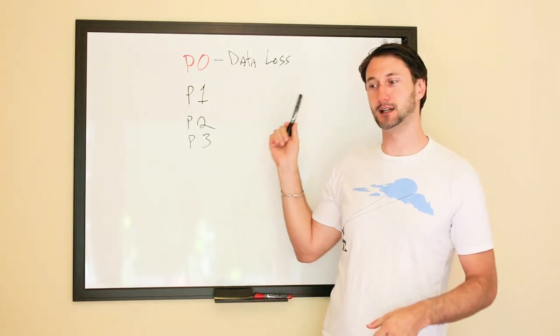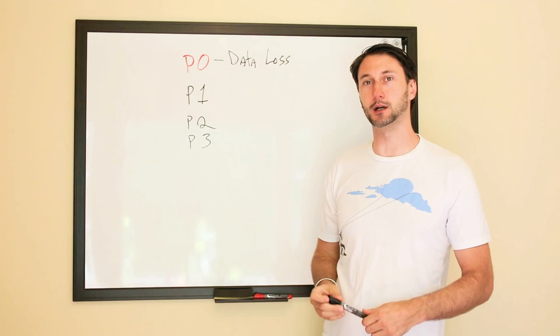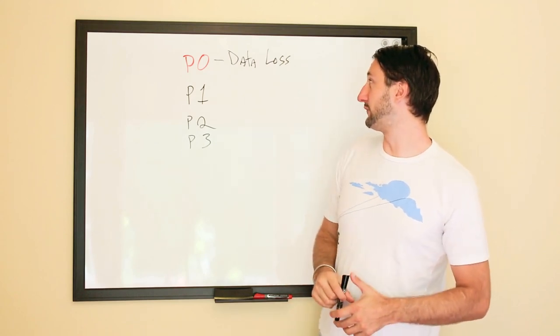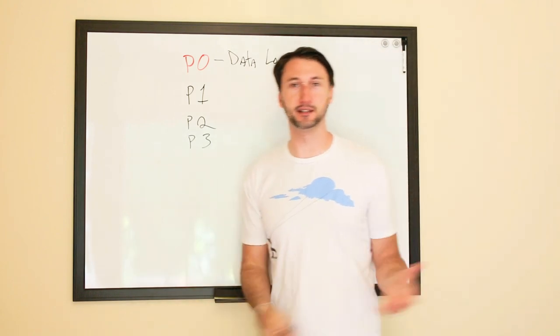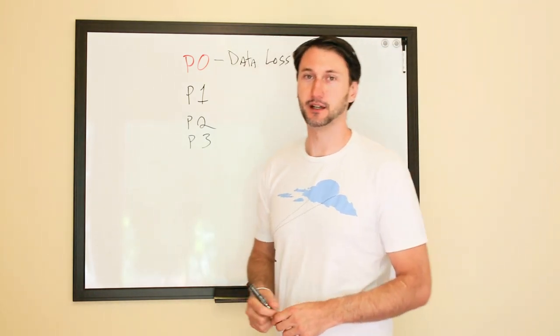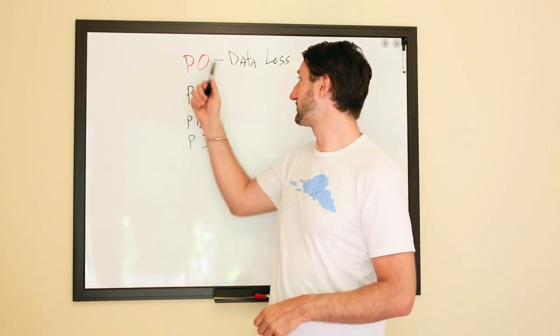Think of it as: if users have the ability to delete quantities of data that they shouldn't delete, then that's when I would say that's a P0.